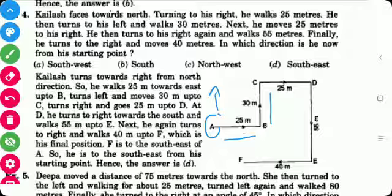Then he moves 25 meters in his right. He then turns to his right. Again walks 55 meters. And finally he turns to the right. That is 40 meters. So in which direction he is now facing.